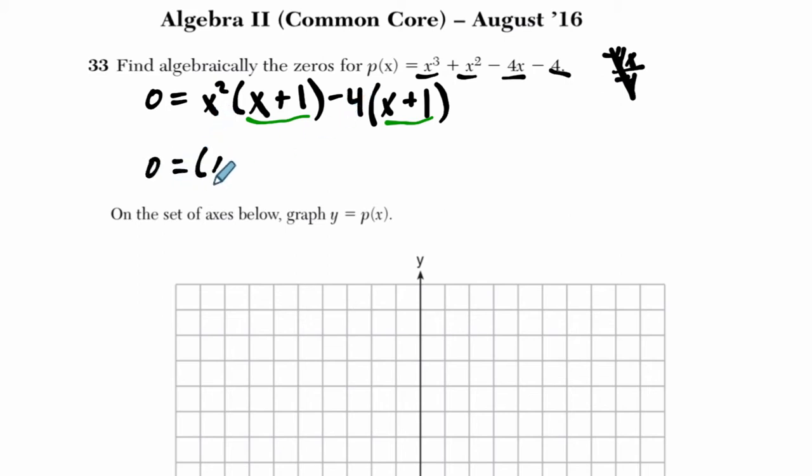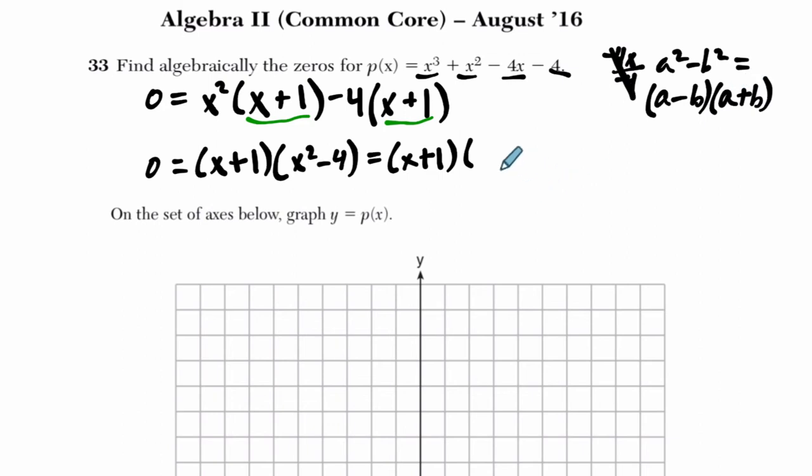So I have x plus one times x squared minus four, and you might remember that x squared minus four is a difference of squares. For difference of squares, a squared minus b squared always factors to a minus b, so the square root of the first and second term subtracted, times the square root of the first and second term added. This is the difference of two squares. So we get x minus two, the square root of the first and second, and then x plus two.